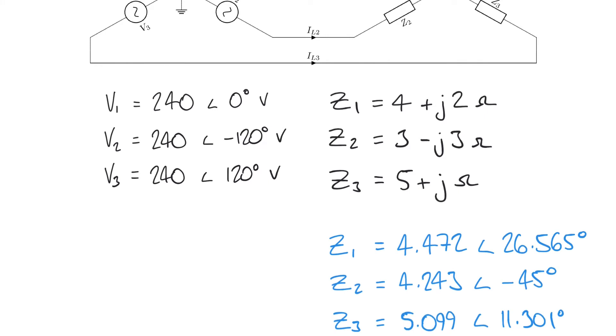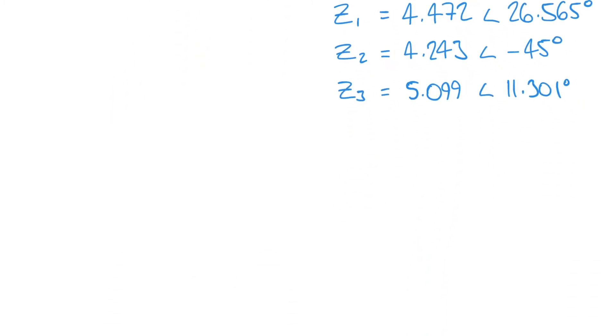The reason we've done this is because we can perform our divisions using Ohm's law a bit more easily in polar form. We can say that I1 must be equal to V1 divided by Z1, I2 equals V2 divided by Z2, and so forth.